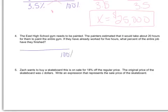100% would represent the entire gym, and they said that would be 20 hours. So far, they've only worked five hours. We want to know what percent that is. So we're going to cross-multiply. Well, X times 20 is 20X, and 5 times 100 gives me 500. And so then when I divide both sides by 20,